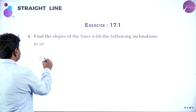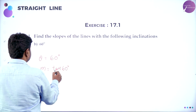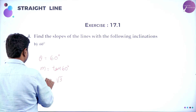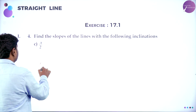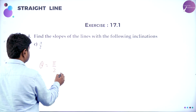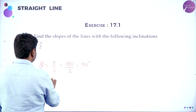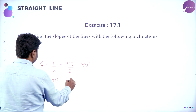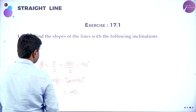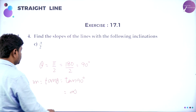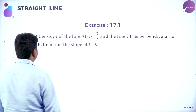Further, theta is given as pi by 2. Pi by 2 means 90 degrees. Slope M is tan 90 degrees. Tan 90 degrees is not defined. So slope is not defined — we can say infinity. Slope is not defined when the line makes 90 degrees with X-axis, meaning it has infinite slope.